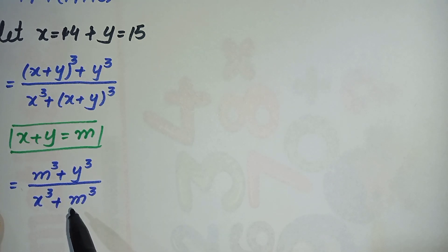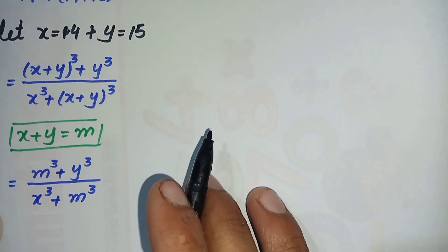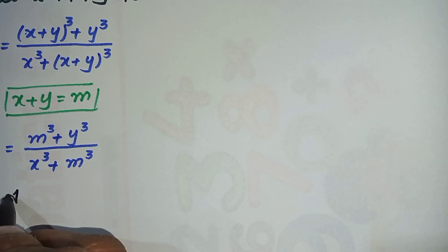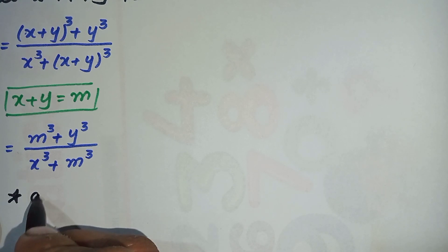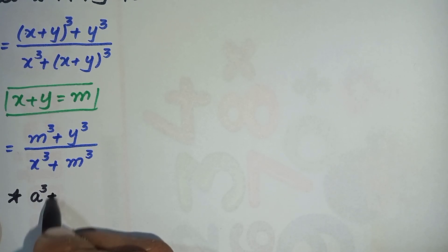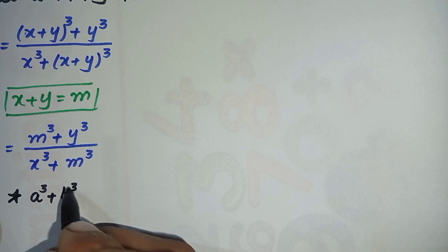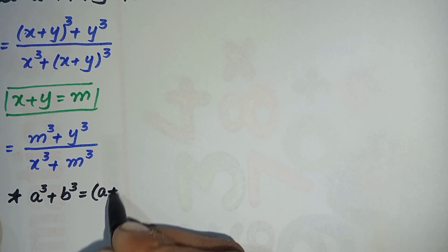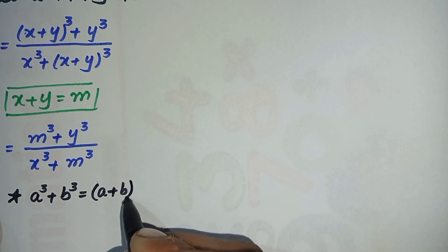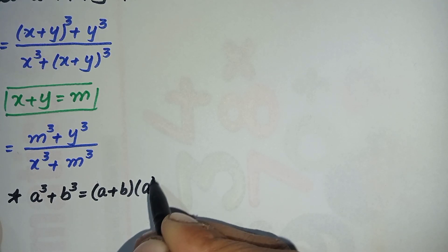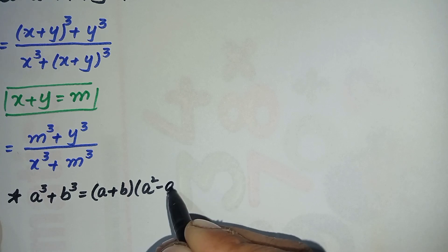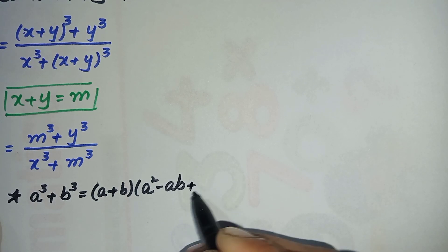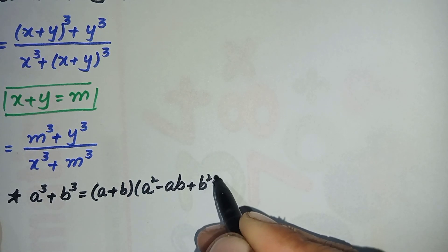Here in the numerator and denominator we will use a cubic identity. The identity is: a³ + b³ = (a + b)(a² - ab + b²).